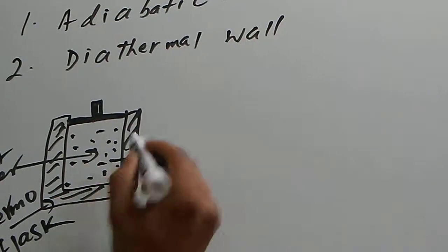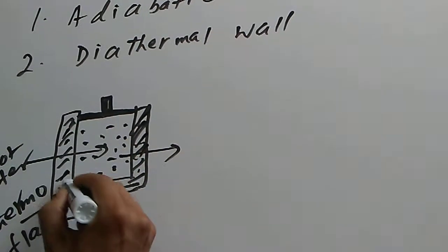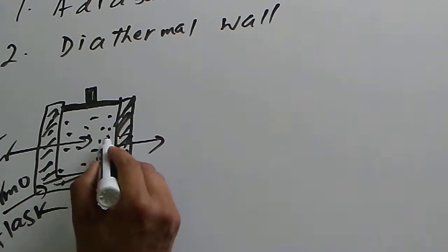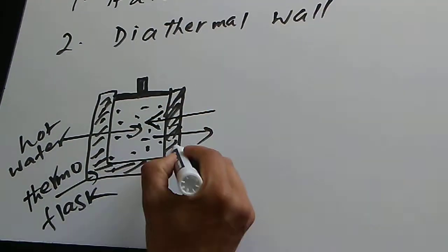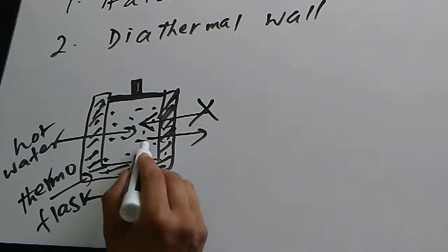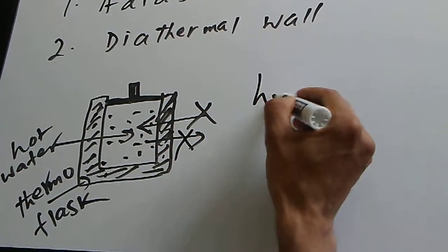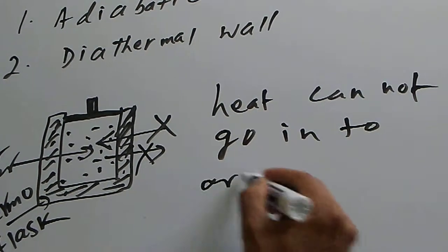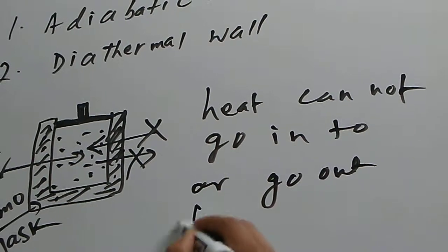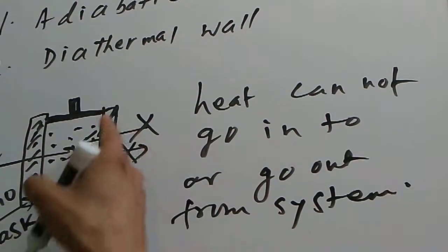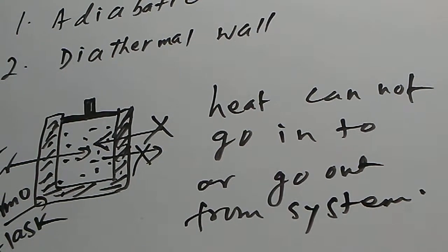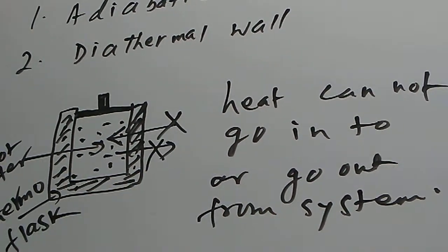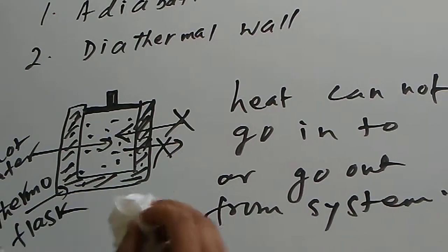The walls of the thermoflask do not allow heat to go from inside to outside, or from outside to inside. Heat cannot come inside through this wall, and heat also cannot go from inside to outside. So heat cannot go into or go out from the system — these kinds of walls are called adiabatic walls.